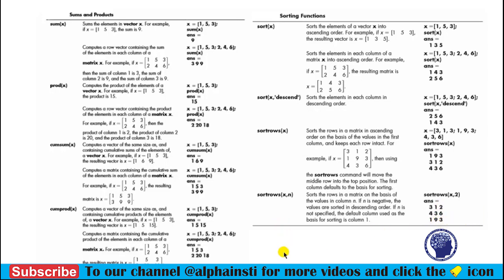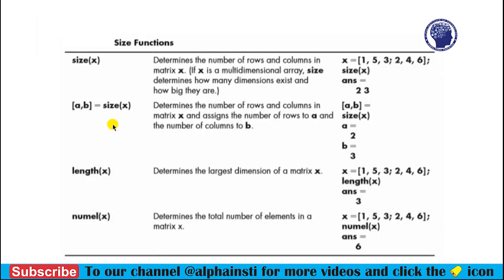Here we have the size functions, which we have already discussed in a previous lecture. The size function is used to determine the number of rows and columns of a matrix, and you can save the number of rows and columns into separate variables a and b. The length function determines the largest dimension of a matrix — if a matrix contains 2 rows and 3 columns, it returns 3. The numel function determines the total number of elements in a matrix — for a matrix with 2 rows and 3 columns, the total elements is 6.